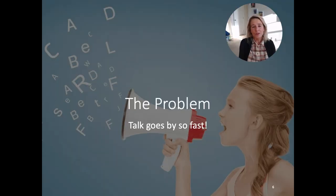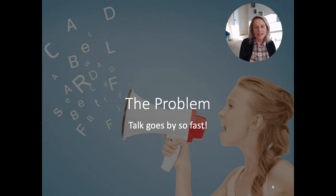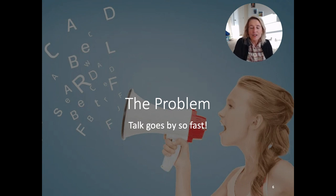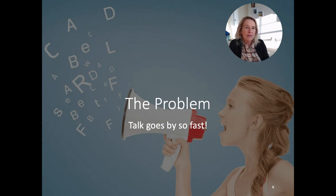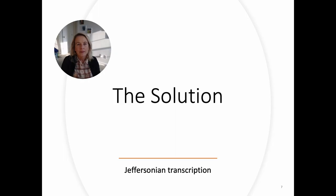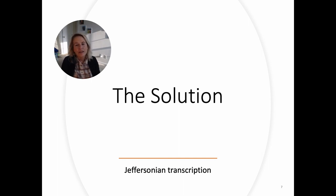One problem is that talk goes by really fast, and it's very hard for us as researchers to recreate post hoc the details of how something was delivered. Recreating actions that are being done in talk can be almost impossible, and yet most research relies on our memories of what happened — whether in a self-report questionnaire or philosophical theorizing about language and the mind. The solution is to work with actual data and transcribe it using Jeffersonian transcriptions, which will capture aspects of interaction that are often hard to notice.